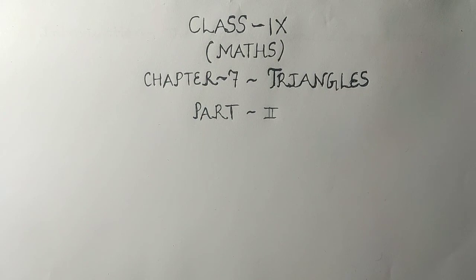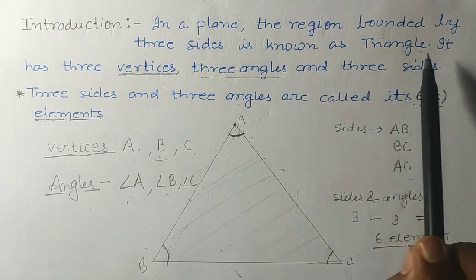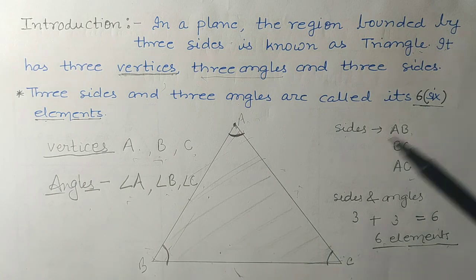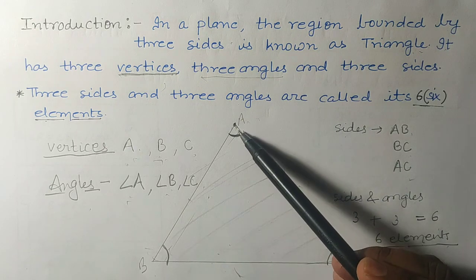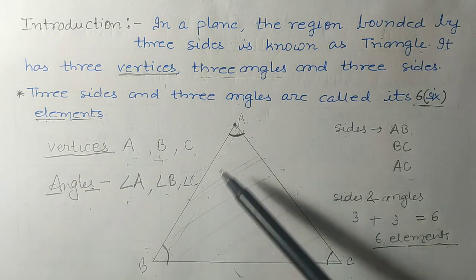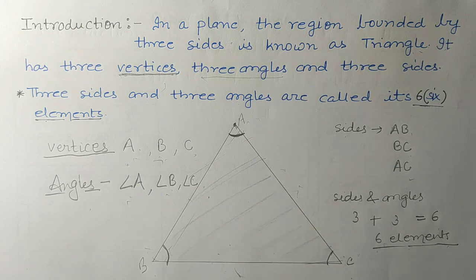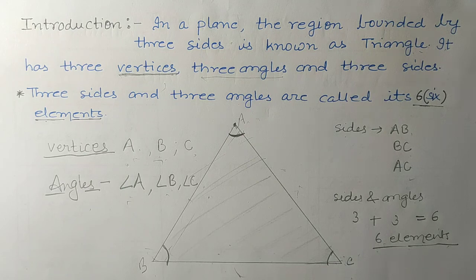Before starting today's topic, let us revise what we studied in the last part. We studied the definition of a triangle: in a plane, the region bounded by three sides is known as a triangle. A triangle has three vertices (A, B, C), three sides (AB, BC, AC), and three angles (angle A, angle B, angle C) — these six are known as the six elements of the triangle.